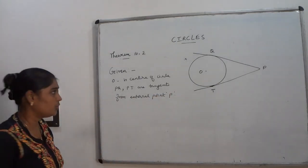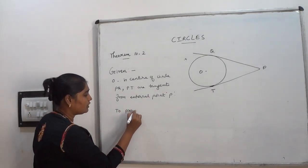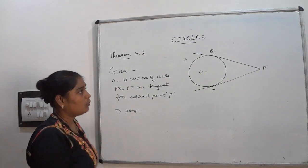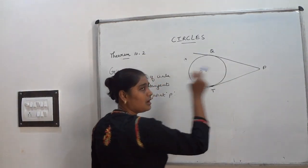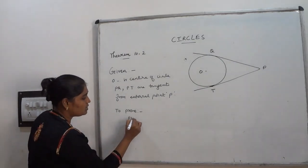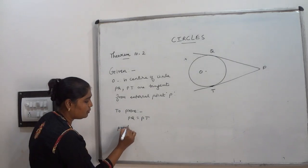These are the two things given to you. What do you have to prove? I have to prove that the length of the tangents are equal. What are the tangents? PQ and PT. These lengths are equal I have to show. So PQ which is equal to PT.